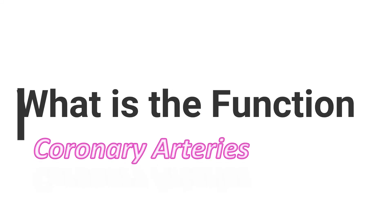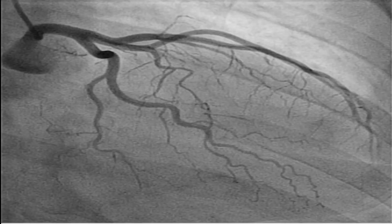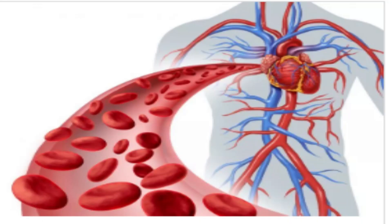The function of the coronary arteries and their branches is to supply your heart with blood. Your heart muscles need the oxygen and nutrients in blood so they can pump blood through your heart and the rest of your body.